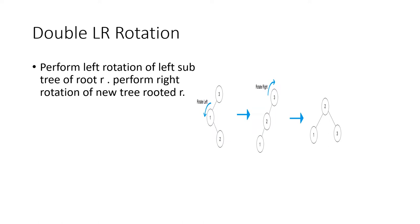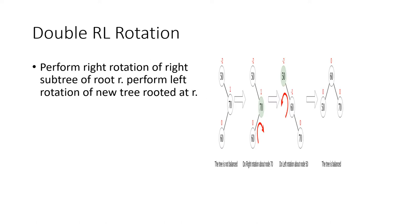So it is a balanced AVL Tree. Next is double RL rotation. RL is right left rotation. First perform right rotation of the right subtree of root R, and then perform left rotation of the new tree rooted at R. Here is the example. The balance factor of 50 is minus 2, so this is an unbalanced tree. To make it balanced, first rotate right side, then it will be 50, 60, 70. Here 60 is the root node and 50, 70 are the leaf nodes. The balance factors of 50, 60, 70 are 0. Then it is a balanced AVL Tree.